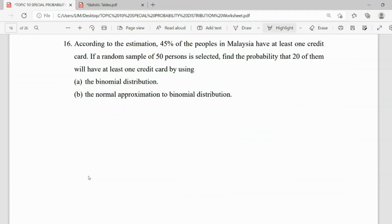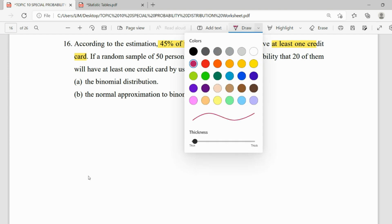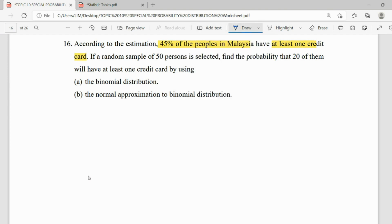Okay, so for this question, the question said 45% of people in Malaysia have at least one credit card. So the situation here is that 45% have at least one credit card. When we transform it to the wording of mathematics, it will be probability of having at least one credit card is 45%, or 0.45.